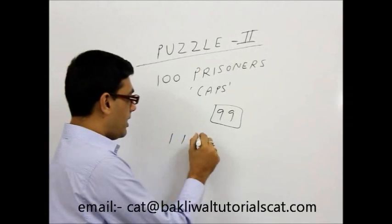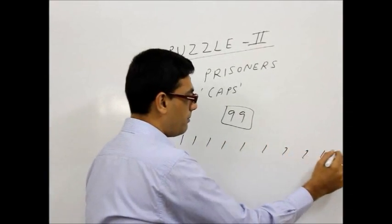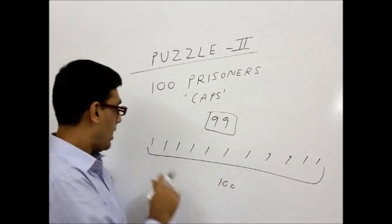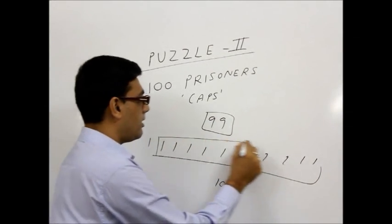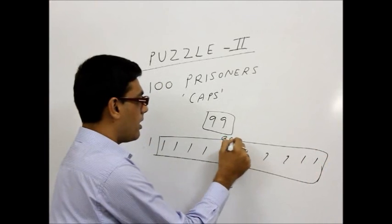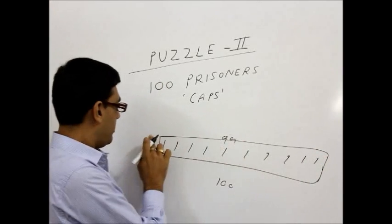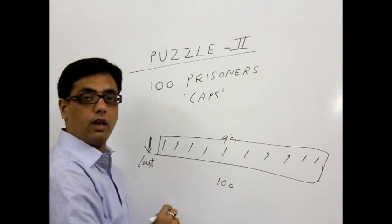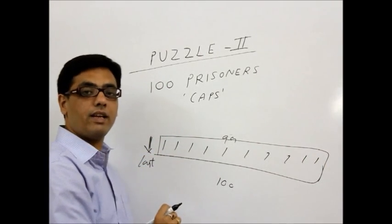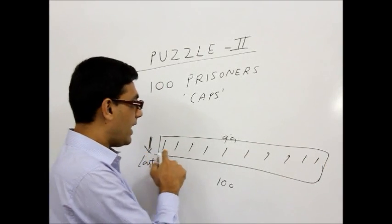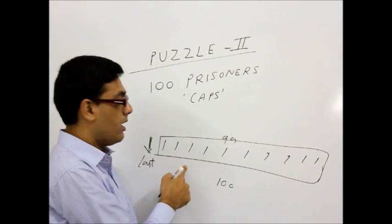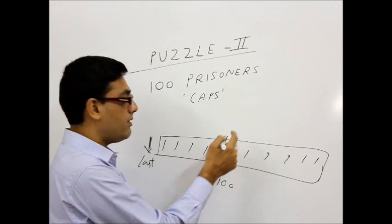Well, you have to understand, you have to go in detail and try my best to explain. Let's say these are 100 people. These are the remaining 99 people and this is the last person.